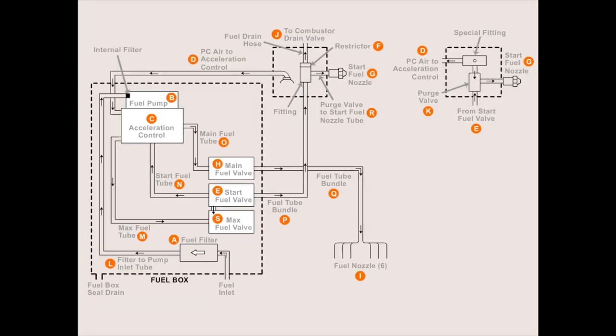The fuel system consists of a fuel pump and a control assembly. The fuel pump is protected by a 10 micron inlet filter. The control assembly is protected by a 25 micron filter. A hydromechanical governor and metering valve control fuel flow to the engine during ignition and once it has accelerated to operating speed.